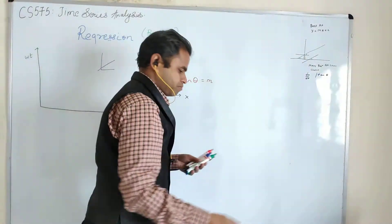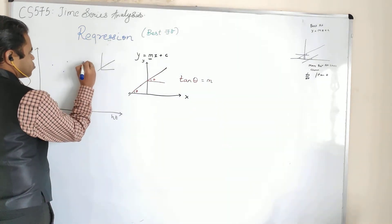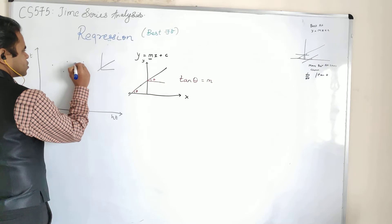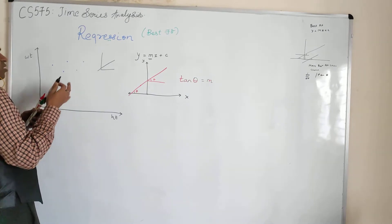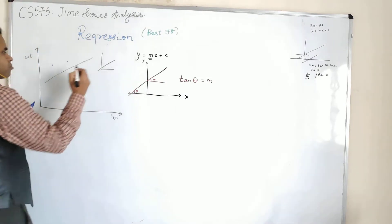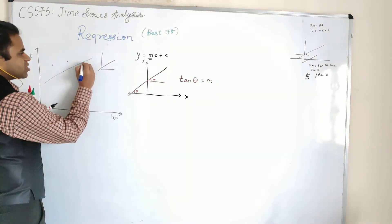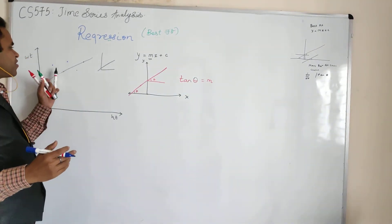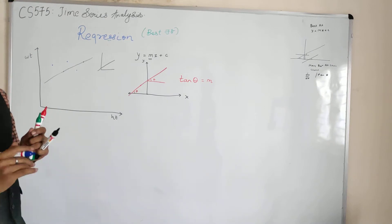Now what do I mean by minimum? Let us draw an example with four points. When I draw a line of regression, two points are overlapping with the line, but three points are not on the line. So how do I determine whether this is a good or bad regression line? We calculate the distances from this line. We put a perpendicular line from each missed point to the regression line.